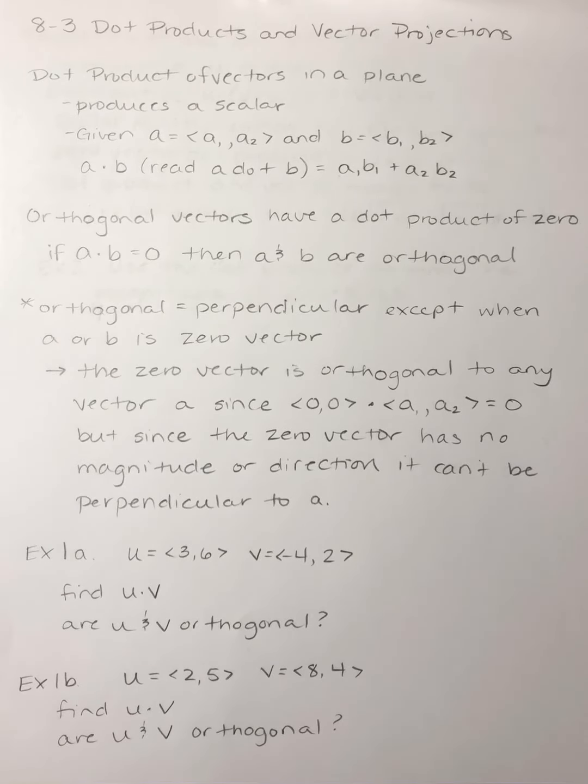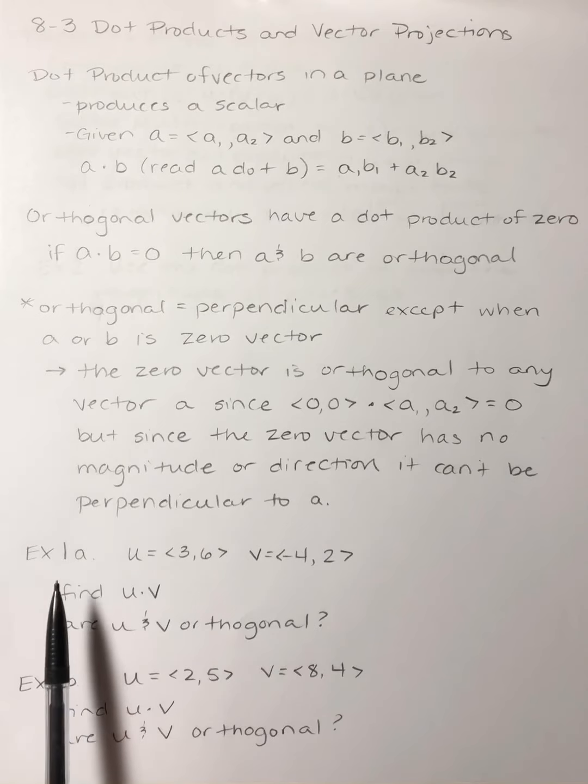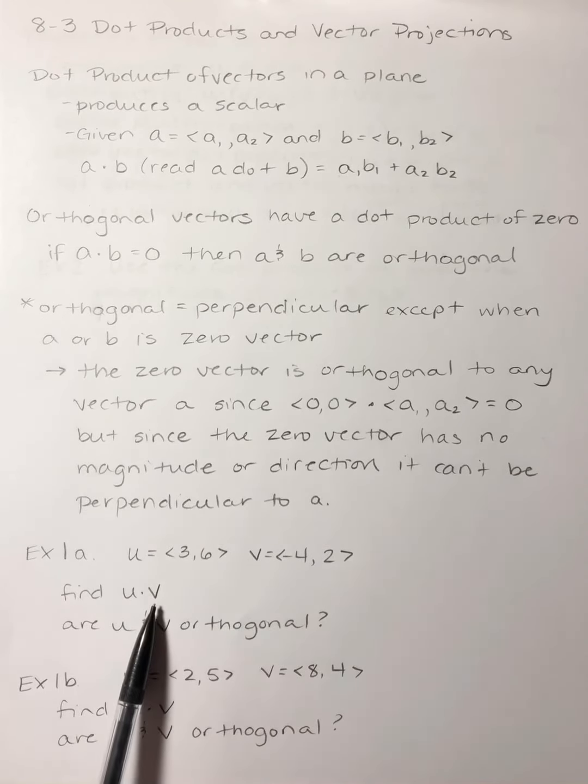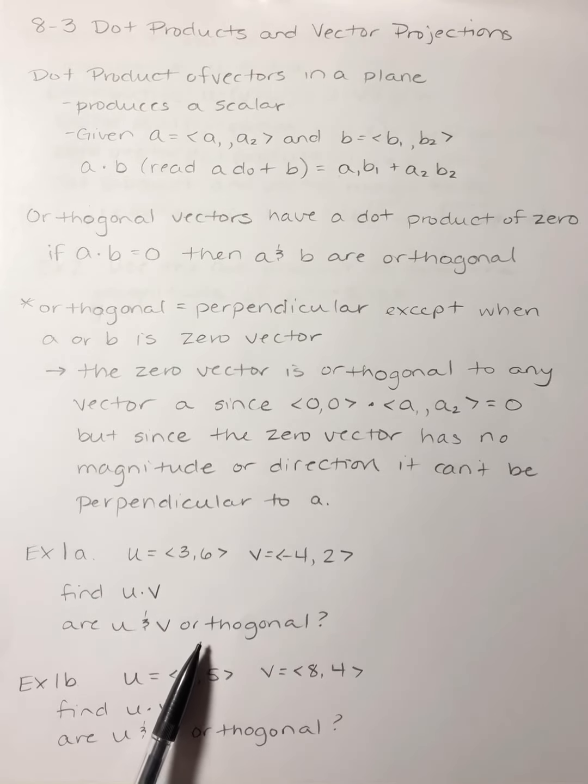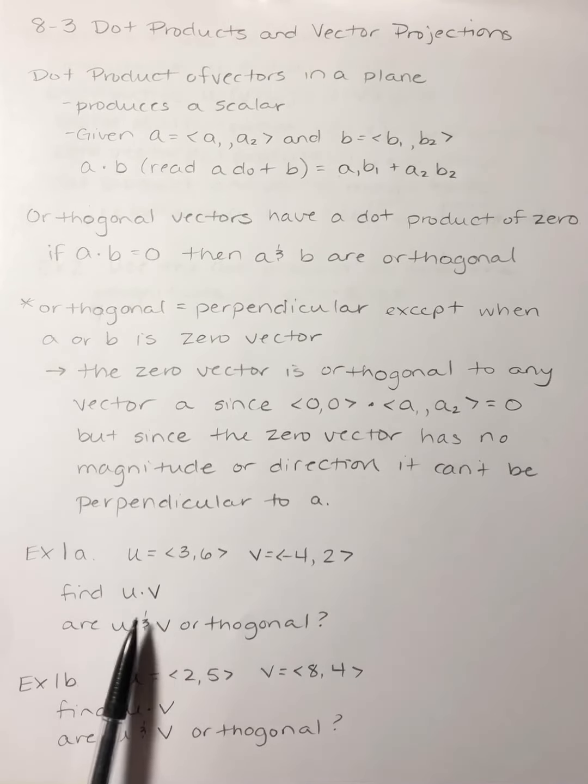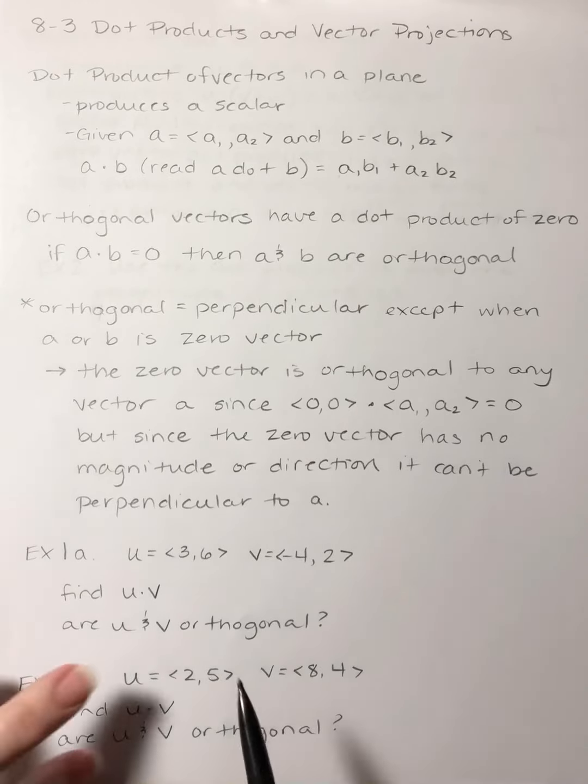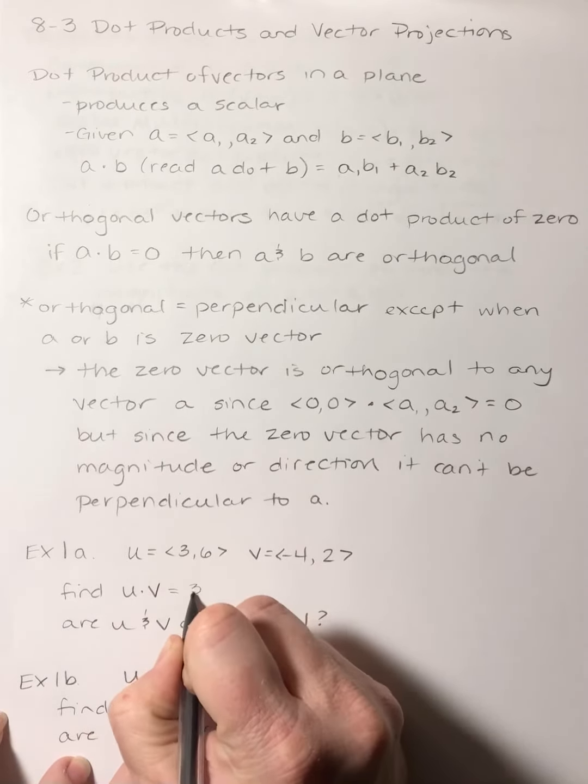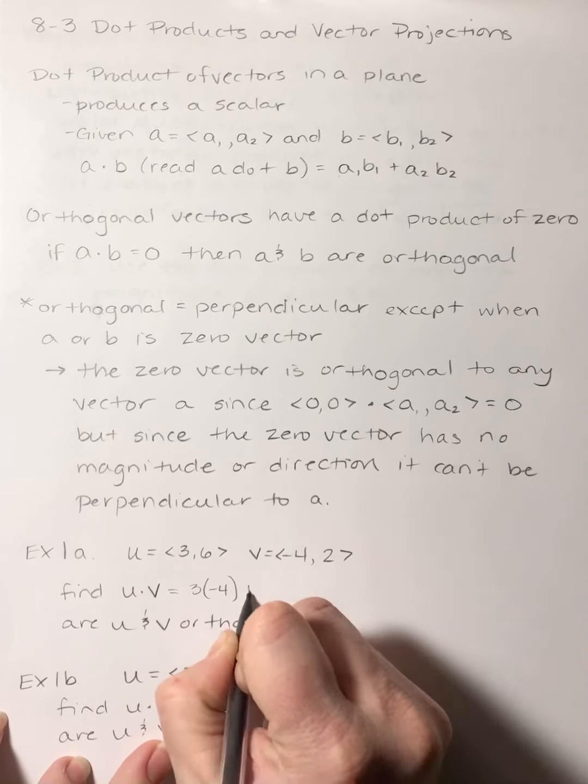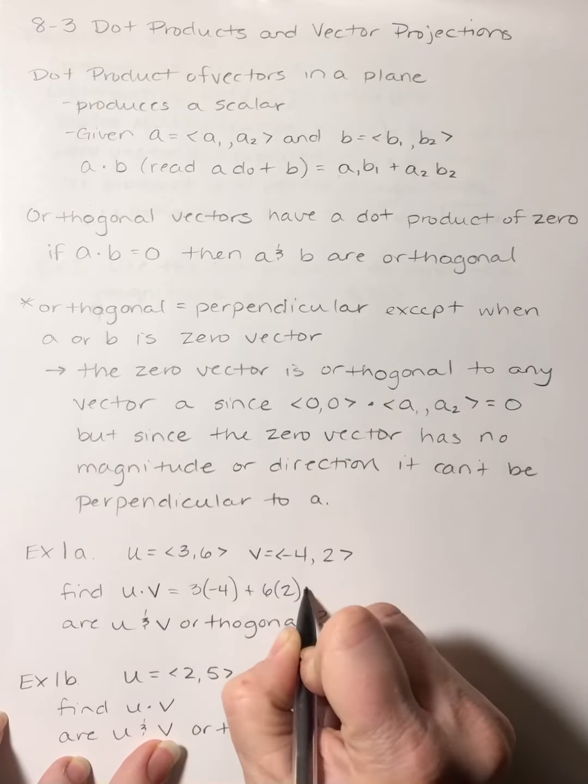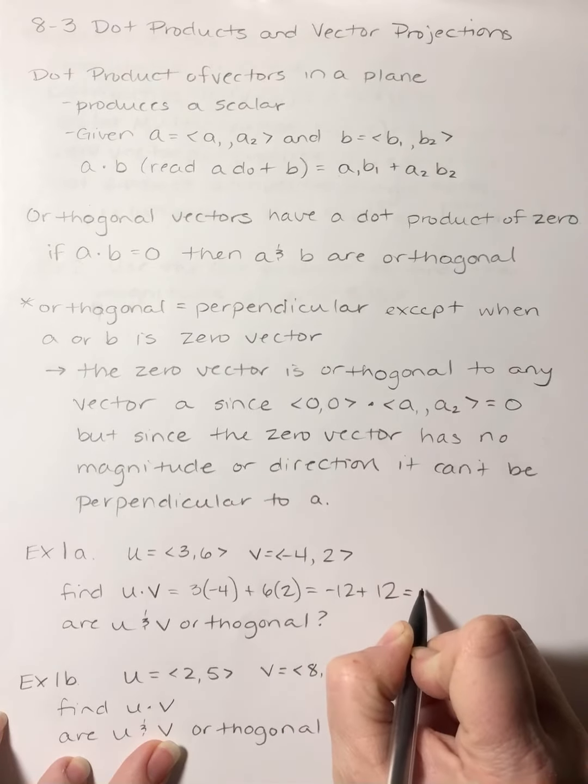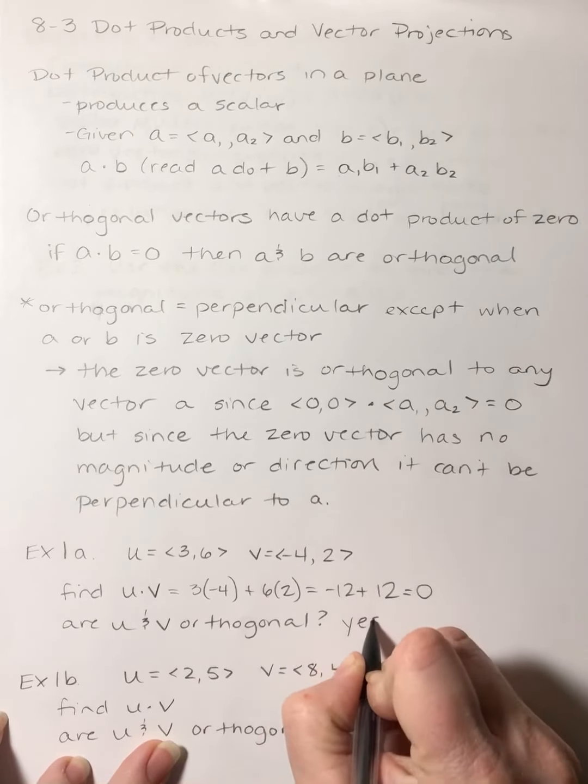For the homework, they're going to give you some vectors and say find u dot v, and then are they orthogonal? By definition, if my dot product is zero, they're orthogonal. It's a yes or no question. To find my dot product of u dot v, I take 3 times negative 4 plus 6 times 2. So I get negative 12 plus 12, which is zero. So are they orthogonal? Yes.